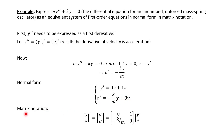That allows us to go right into matrix notation. We have the vector [y, v] prime, which equals the coefficient matrix times the vector [y, v]. The first equation has zero y's and one v, and the second equation has negative k/m times y and zero v's. So this is the matrix notation expressing our original second-order differential equation as an equivalent system using first-order equations.